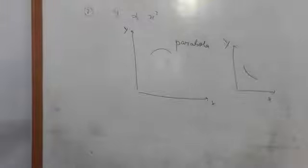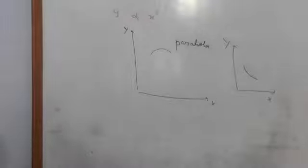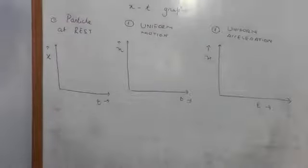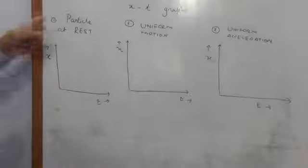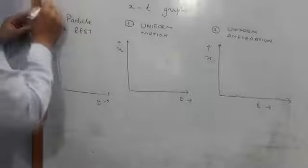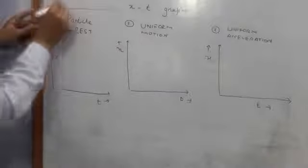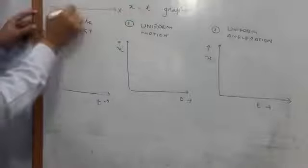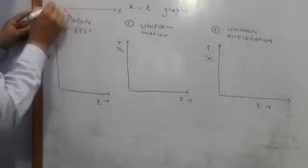With these three cases in mind, you can easily plot position-time graphs and velocity-time graphs for different cases, which we shall discuss shortly. The first type of graph we would like to discuss is the position-time graph. I will discuss three different cases. The first and simplest one is when the particle is at rest. This is your one-dimensional path with origin, x-axis, and values plus 1, plus 2, plus 3, minus 1, minus 2, minus 3.